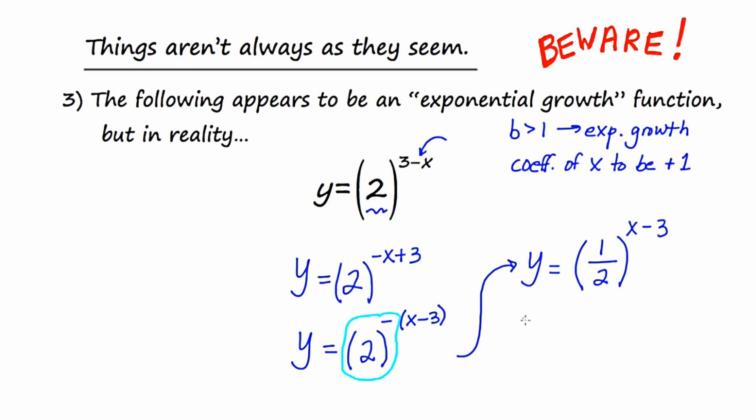And you'll notice that our base is actually 1 half. So what seemed like it was exponential growth in the end became exponential decay because our b value is between 0 and 1. And the rule is you don't want to assess whether it's exponential growth or decay unless you've made the coefficient of x positive 1. So this right here is the most important thing of all to remember. Remember, when you're dealing with exponential functions, before you make the classification as to whether it's growth or decay, you need to make sure the coefficient of x is positive 1.